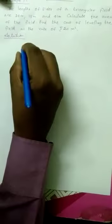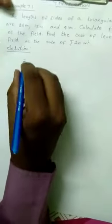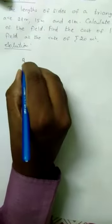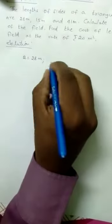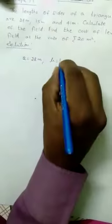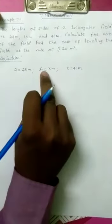The lengths of the triangular field. Let's take the sides: 28 meters, 15 meters, 41 meters. A is the first side of the triangle. Then B equals 15 meters. Then C equals 41 meters. The three sides of the triangle are taken as A, B, C.